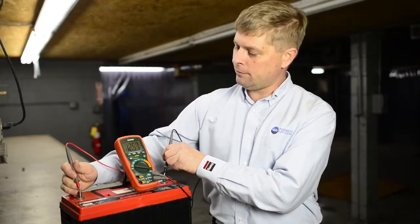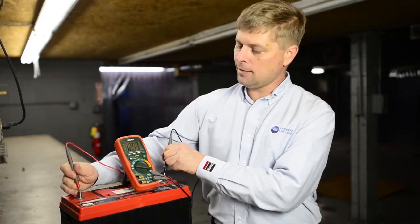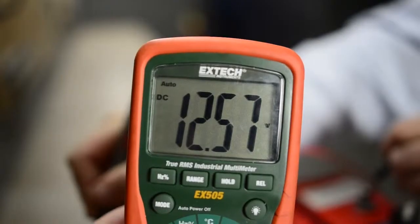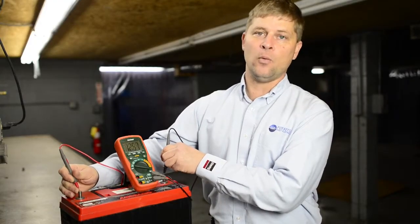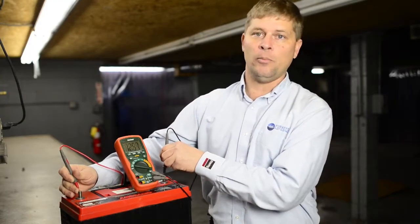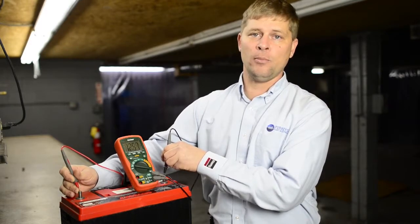Now, it says I have 12.57 on this battery. All that's saying is my red lead reads 12.57 volts. My black lead reads zero. What is the difference between those two? 12.57. That's the only thing a voltmeter does.